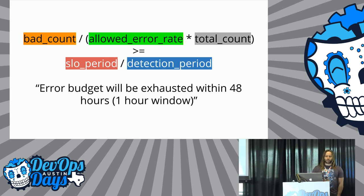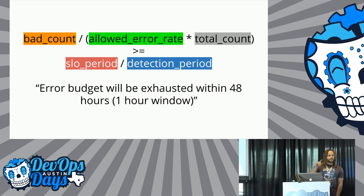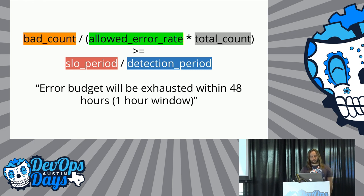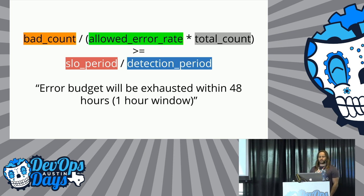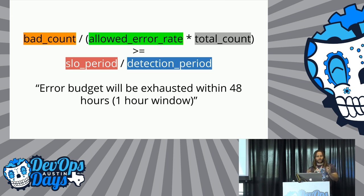The most arcane portion of setting up a Datadog monitor for burn rate alerts will be the monitor's query. The formula we're going to use: bad count is the count of bad requests in a rollup period. Allowed error rate is one minus the SLO — in our example, 0.001. Total count is the count of all requests in a rollup period. SLO period is the period for which the SLO is defined — in our example, 30 days. And detection period is the parameter that determines what burn rate we will detect: if detection period is 48 hours, the alert triggers when the burn rate would exhaust all error budget in 48 hours.